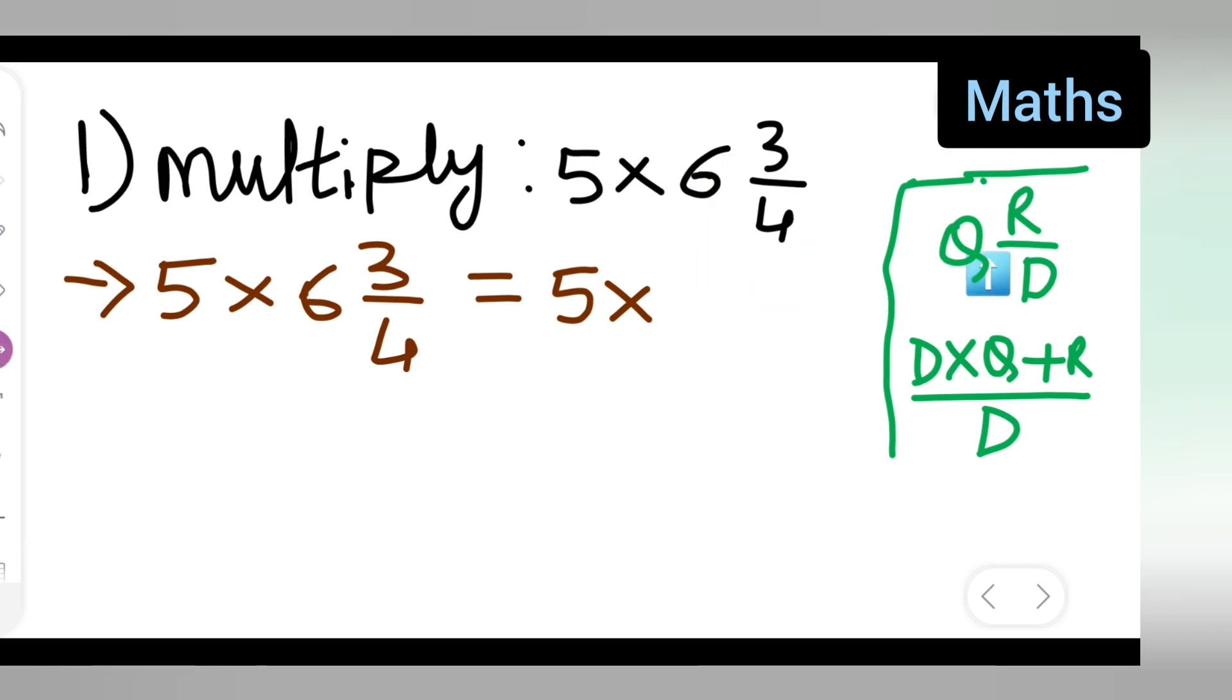This is in this form, right? So d means 4 multiplied with 6, so 6 multiplied by 4 plus remainder is 3 upon 4. Now you can multiply this.